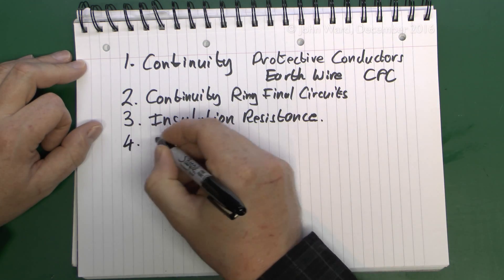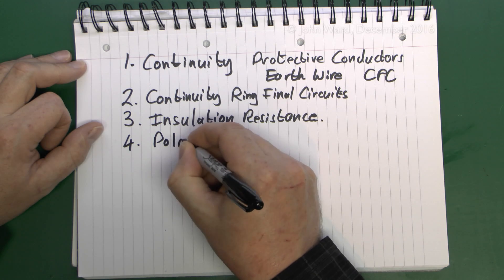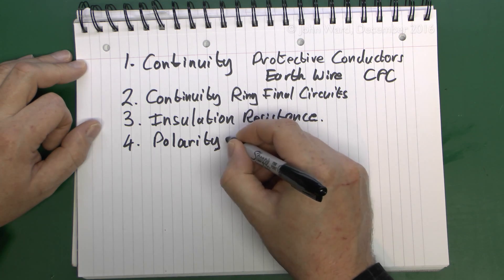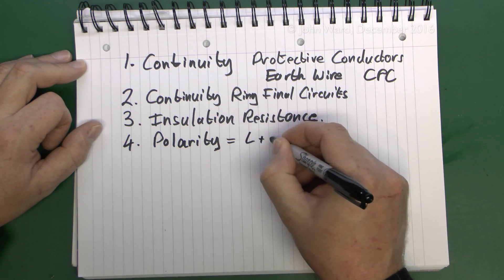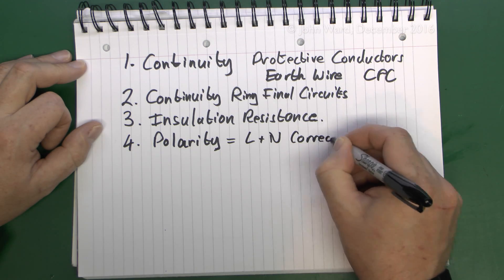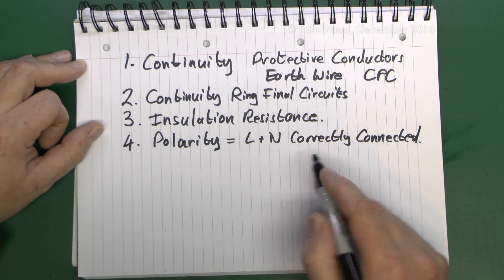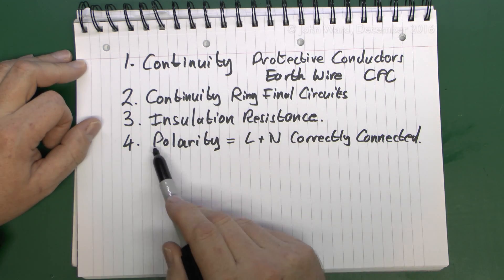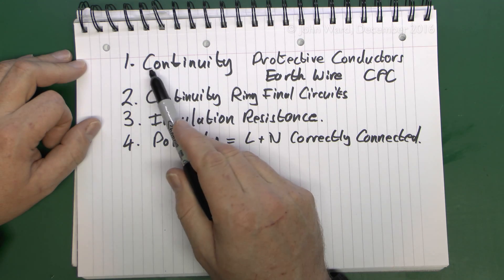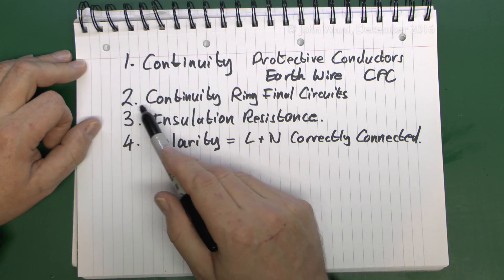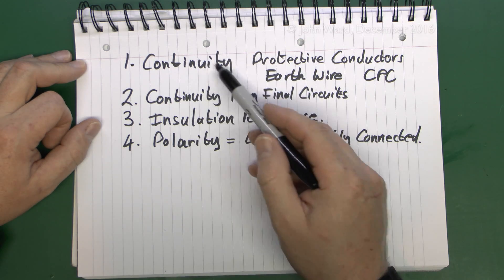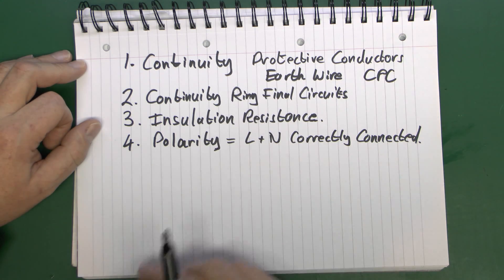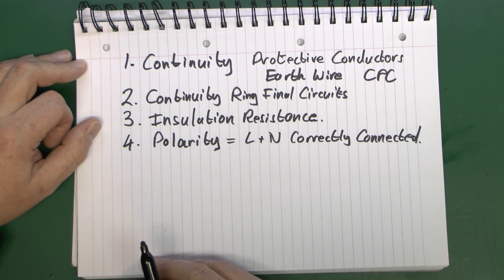Test number four is polarity. AC circuits don't have polarity in terms of negative and positive, but what you're really checking for here is that line and neutral are correctly connected. This needs to be done on all circuits regardless of what type they are. However, it is actually possible to do the polarity test as part of either continuity test one or continuity test two. So if you've done one of those by the most common methods, it's fairly likely you've already done this. But in any case, it does need to be done on all circuits.